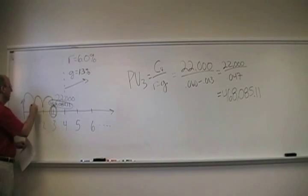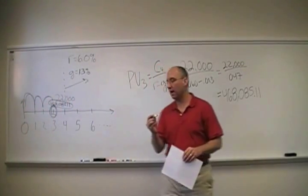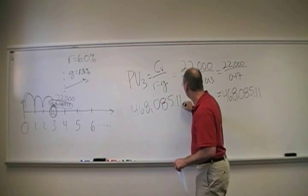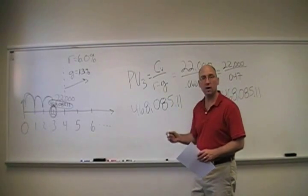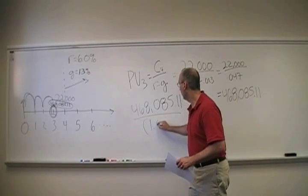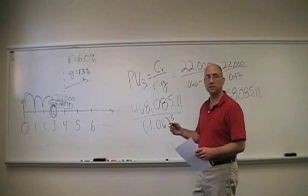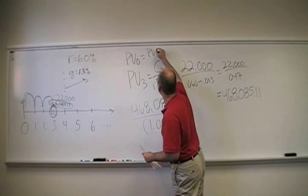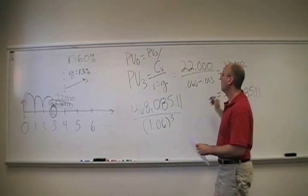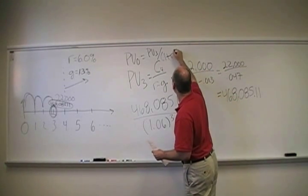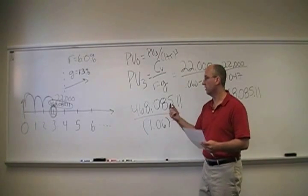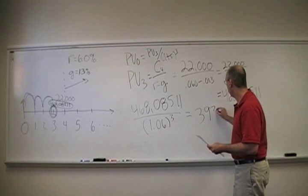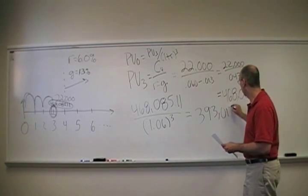Today, we simply would take the 468,085 and divide by 1 plus r to the third, 1.06 to the third. And again, the reason is that the present value today is simply equal to the present value three years from now, which is this number, divided by 1 plus the discount rate, 1 plus the cost of capital to the third. We're taking it back three years, and we do that, we find out that the value of the building is $393,013.28.